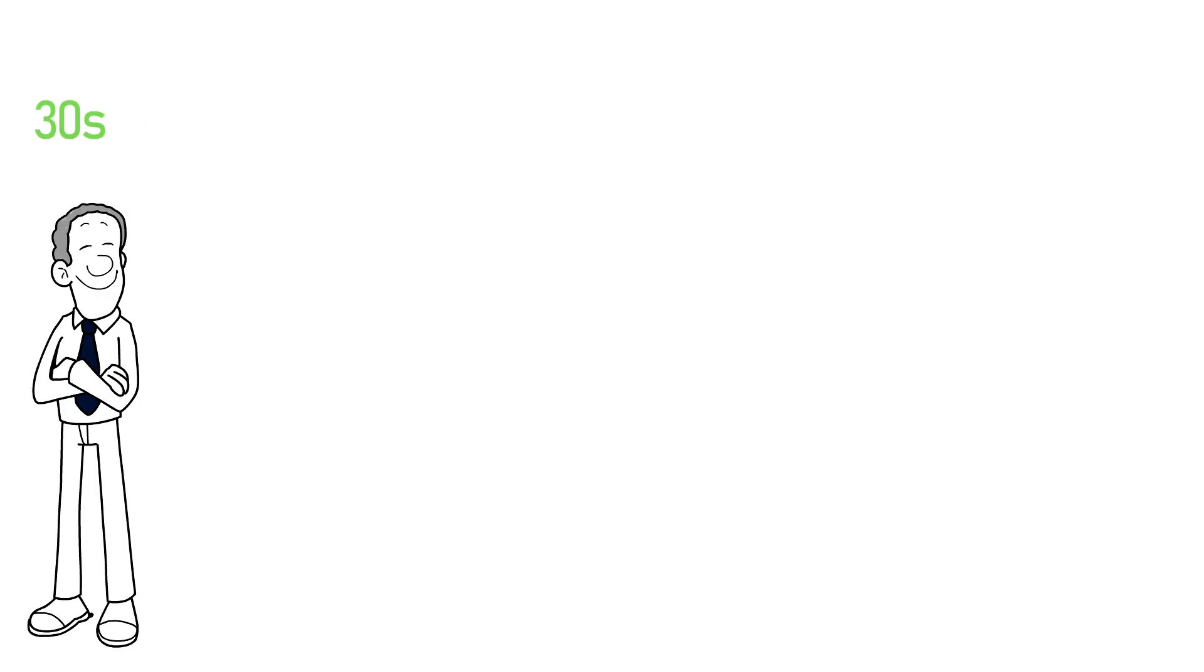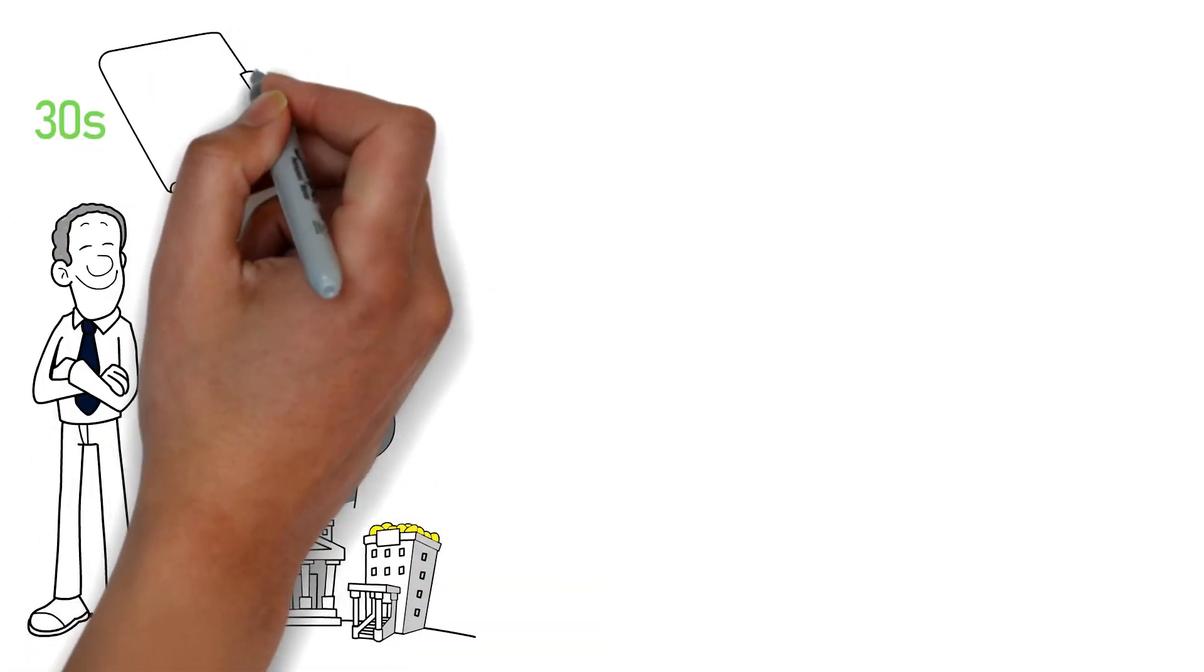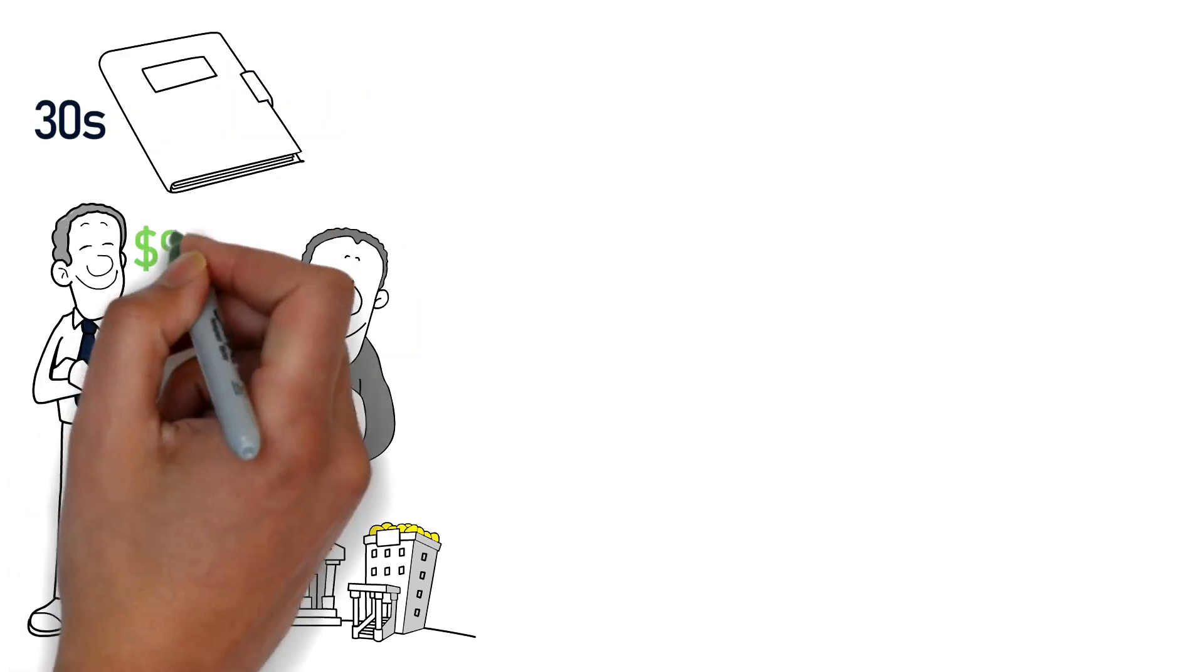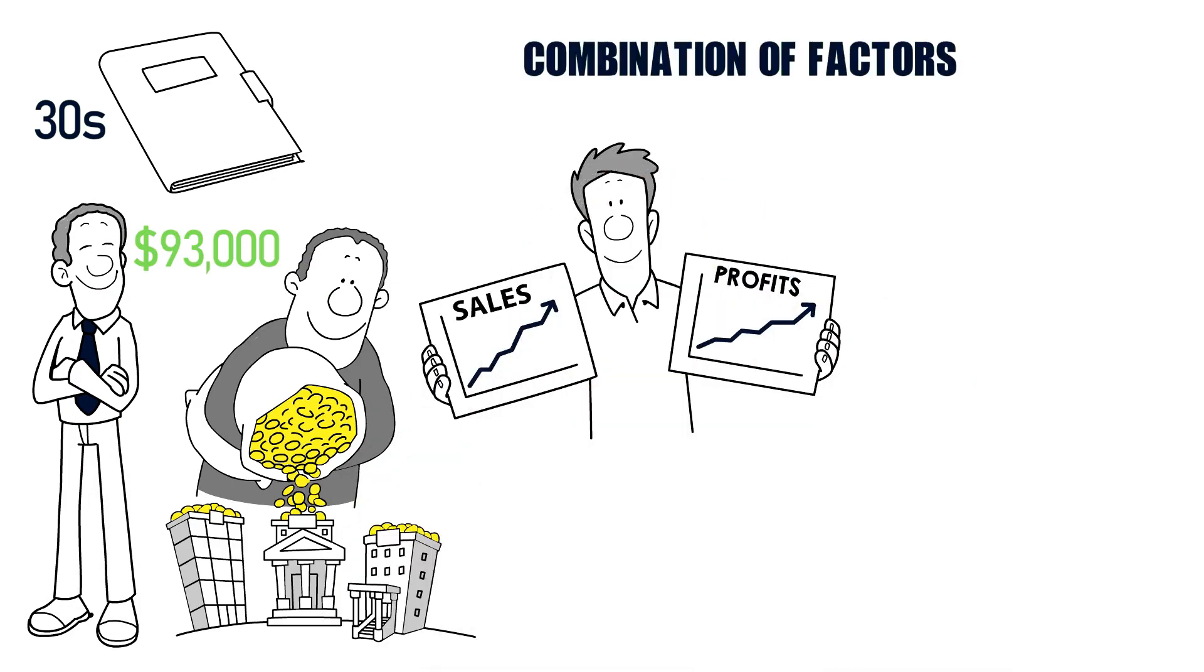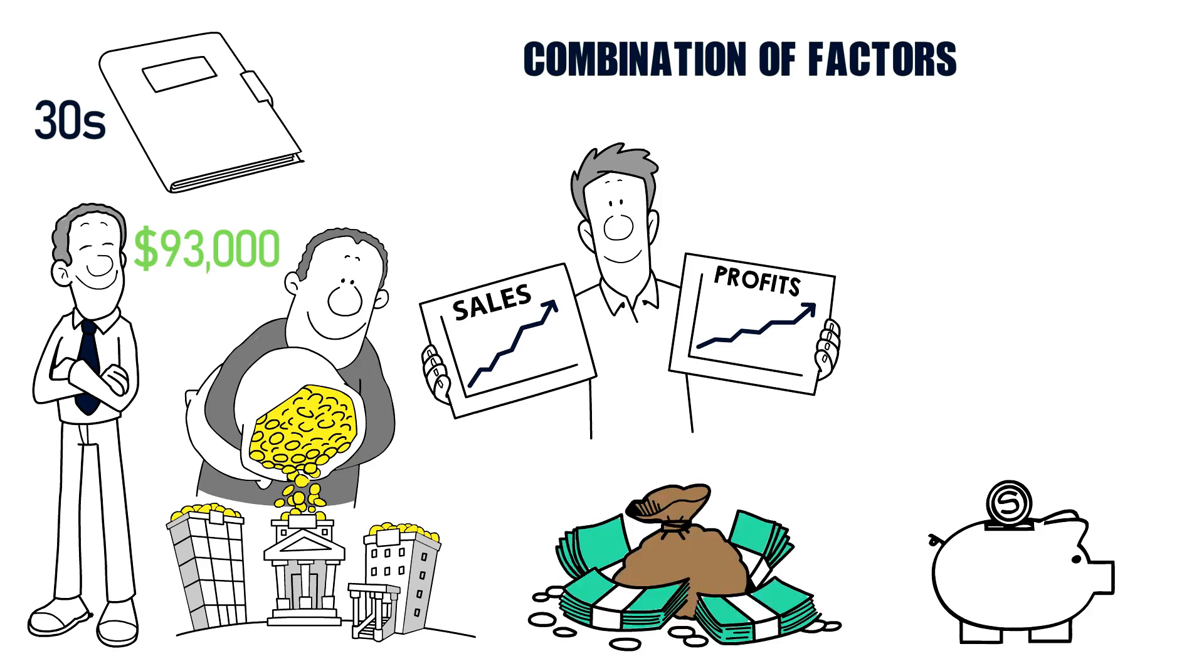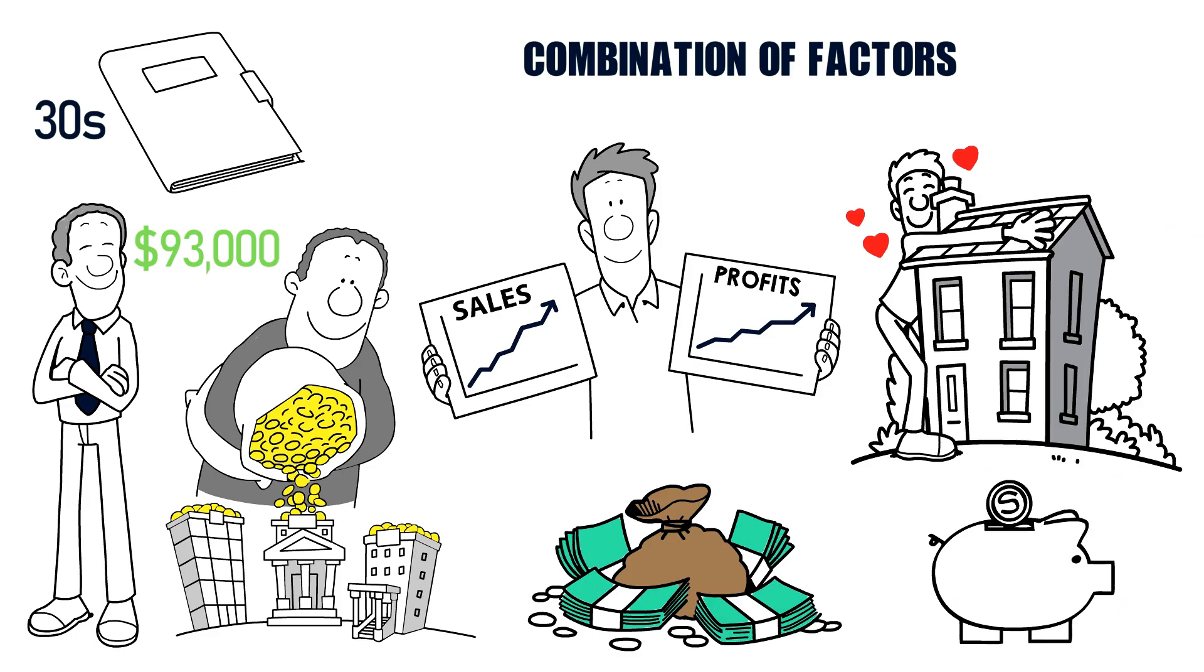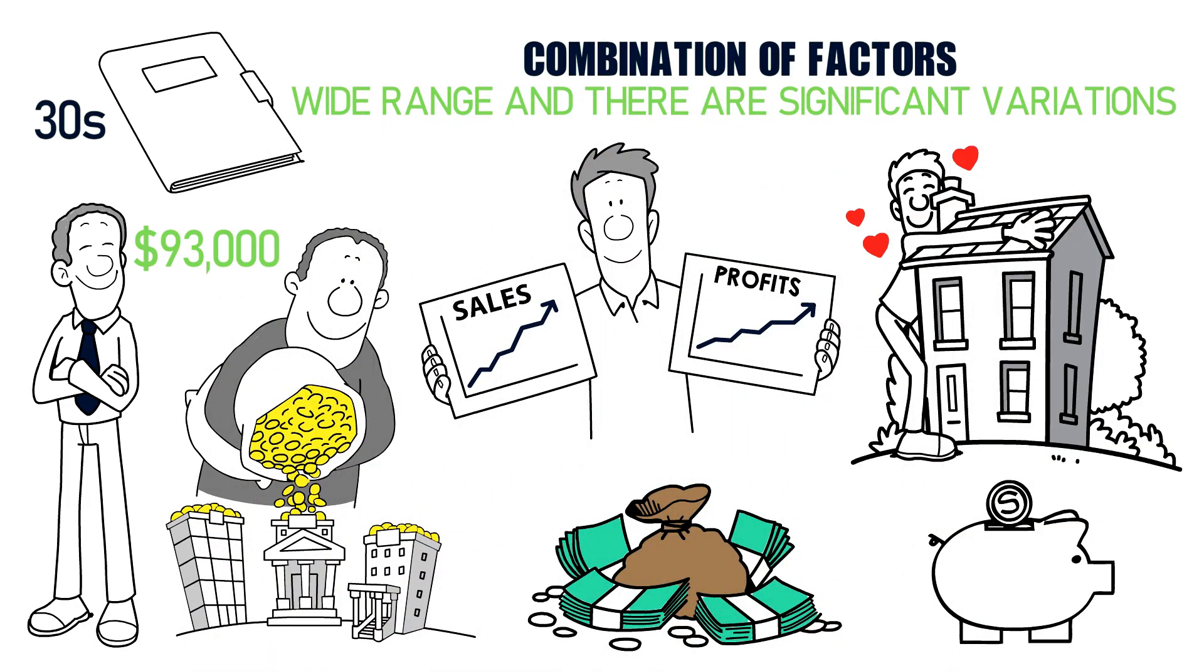Moving on to the 30s, the average net worth increases significantly. A report by The Balance found that the average net worth for someone in their 30s is around $93,000. This is likely due to a combination of factors such as increased earning potential, more time to save and invest, and possibly even home ownership. However, it's important to note that this is still a relatively wide range and there are significant variations within it.